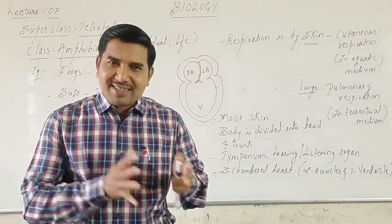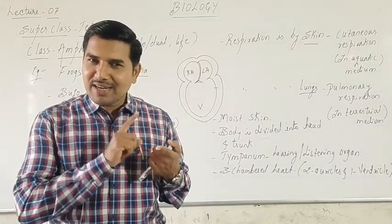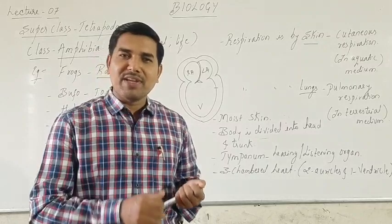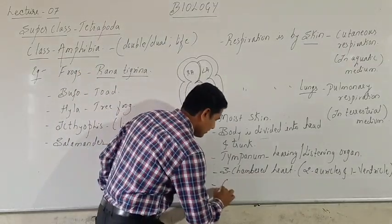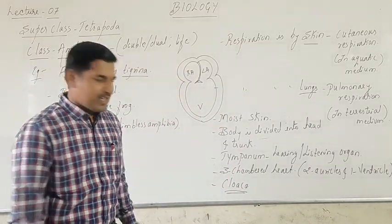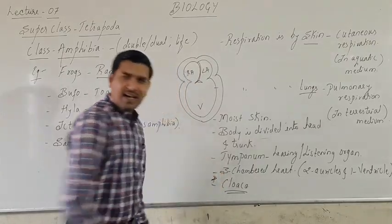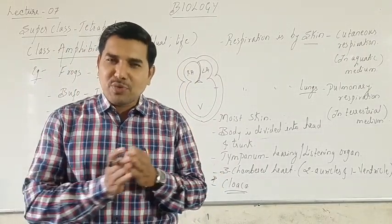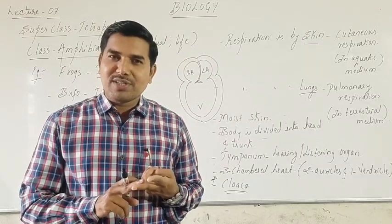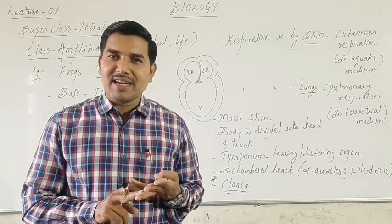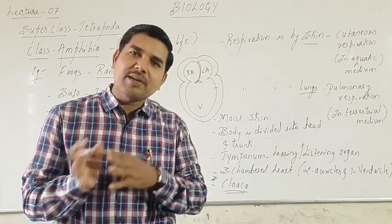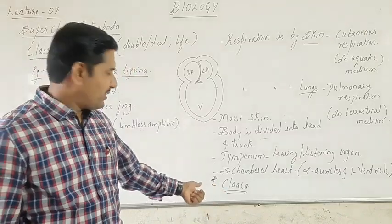They have a single external opening for the digestive system, reproductive system, as well as the urinary system, and that common opening is called the cloaca. Usually the digestive system opening, the reproductive system opening, and the urinary or urogenital system opening are separate, but there is a common opening in case of these animals, which is the cloaca.